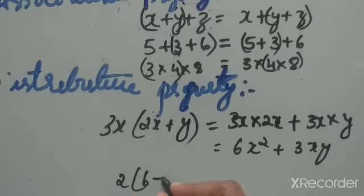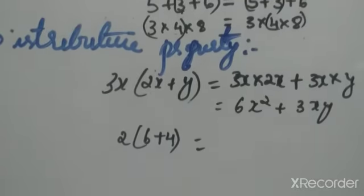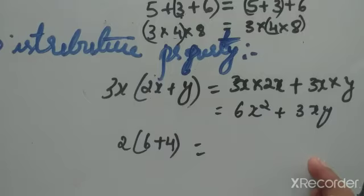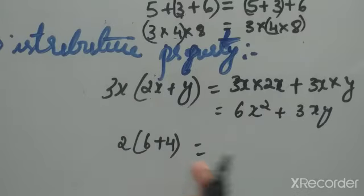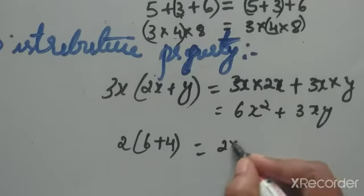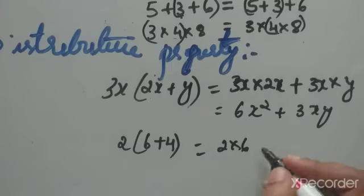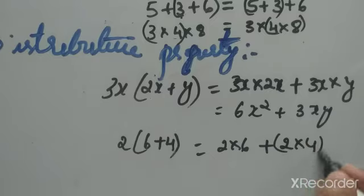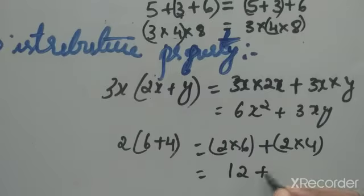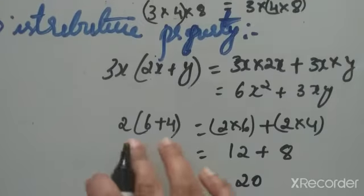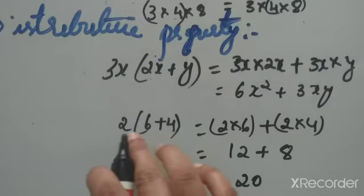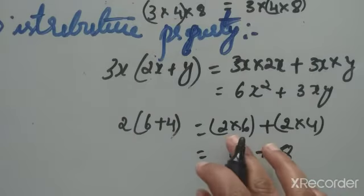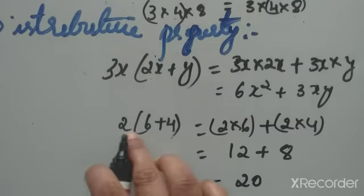Another example for the distributive property: 2 into the quantity 6 plus 4. This means simplifying or removing the bracket. On the right side, we split and distribute: 2 into 6 plus 2 into 4. So 2 into 6 is 12, plus 2 into 4 is 8, giving 20. Distributive property means simplifying: 2 into 6 plus 4 becomes 2 into 6 plus 2 into 4.